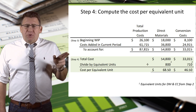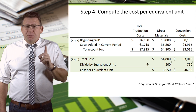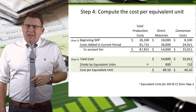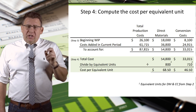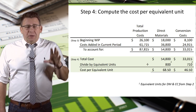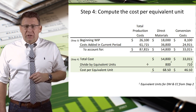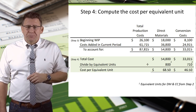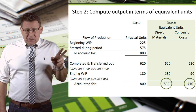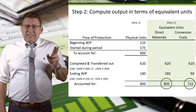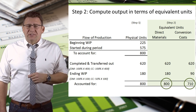Step 4 is calculating the cost of direct materials and conversion costs per equivalent unit. This step is pretty straightforward. We take the direct material and conversion costs from the prior step and divide them by the total equivalent units calculated in step 2. The total equivalent units is 800 for direct materials and 710 for conversion costs — that's what we're going to use in step 4.